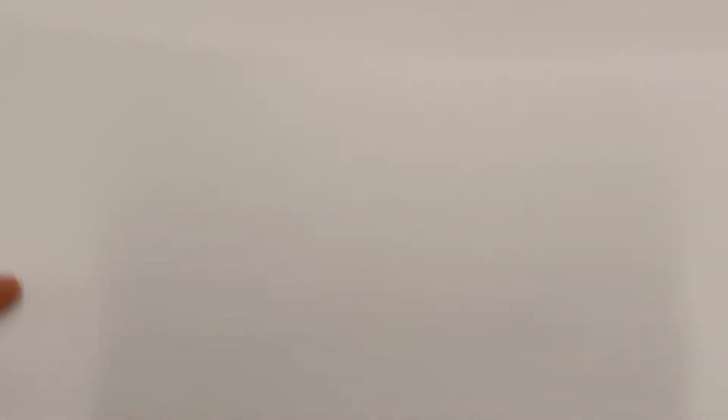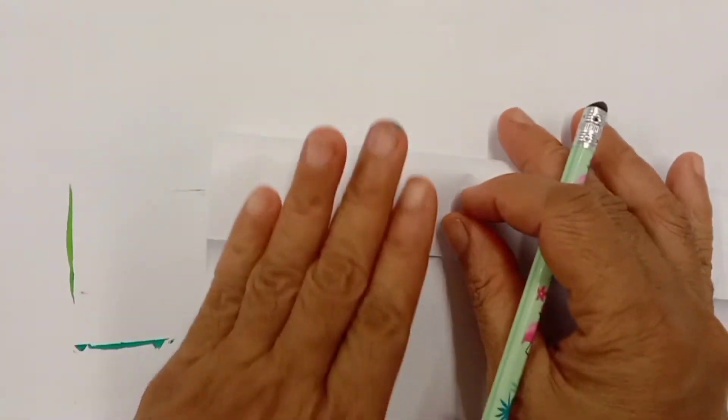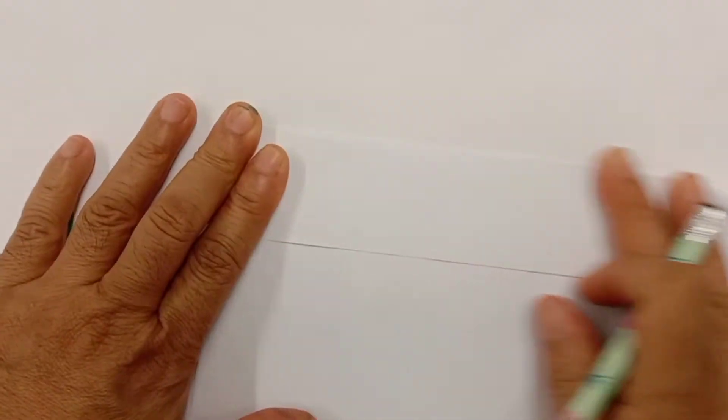Next class, we're going to make our dragonfly. So to do that, we're just going to fold a small part here because we're going to make only a very small dragonfly.